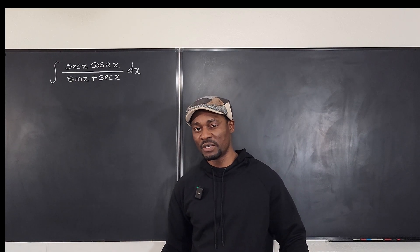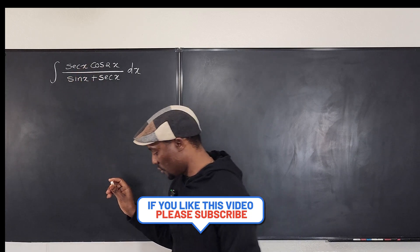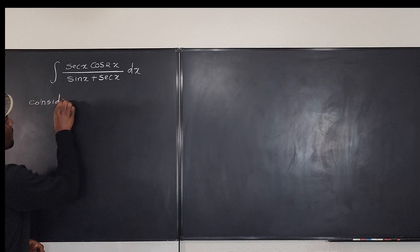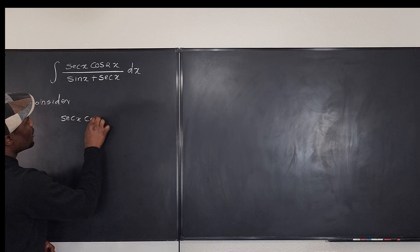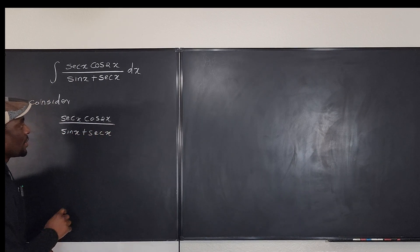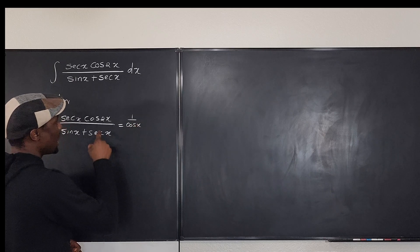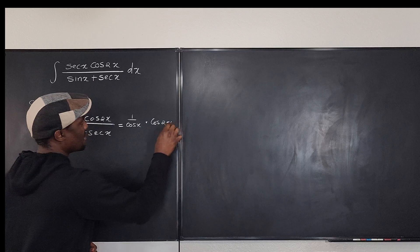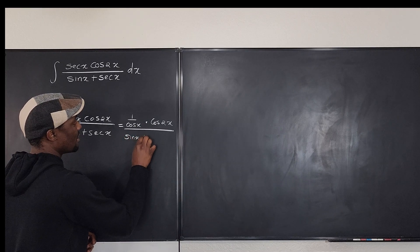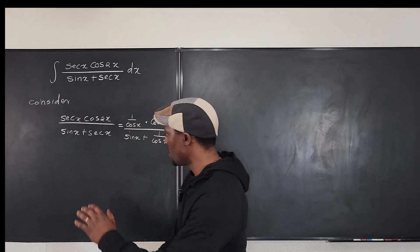I'm going to ignore the integration sign and just deal with the trig expression. Consider: secant x · cosine 2x over (sine x + secant x). I can write this as (1/cosine) · cosine 2x over (sine x + 1/cosine x). Always do this when you don't have an identity and don't know what to do.